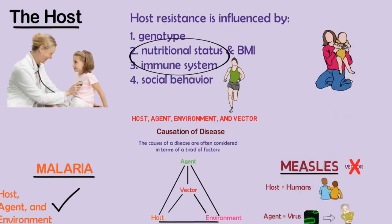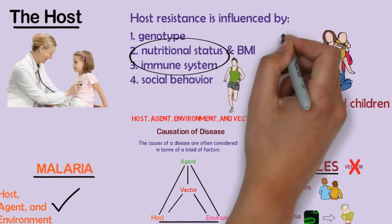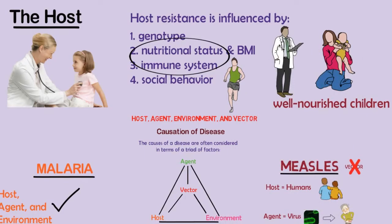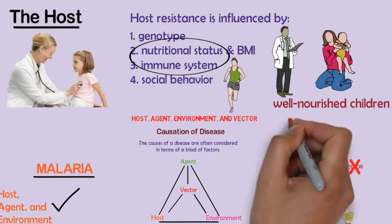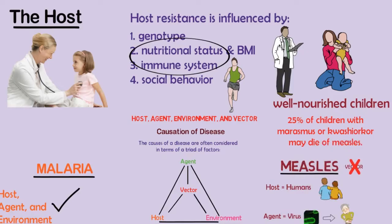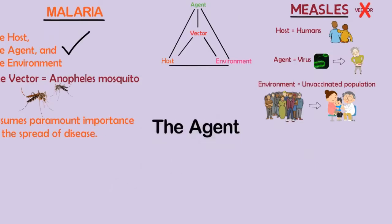Measles is seldom fatal in well-nourished children, even in the absence of measles immunization and modern medical care. By contrast, 25% of children with marasmus — starvation — or kwashiorkor — protein-calorie malnutrition related to weaning — may die from complications of measles.